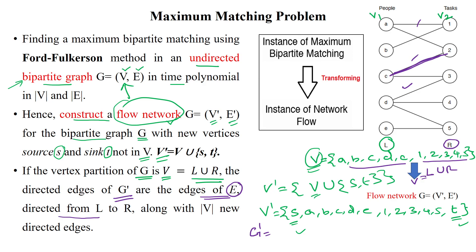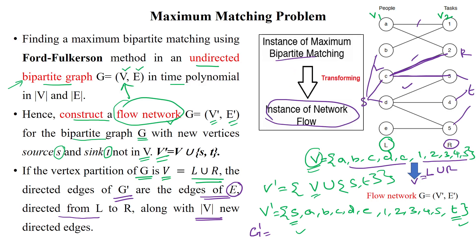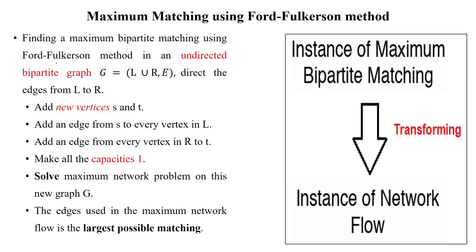The edges in G' are directed from left to right — from the left subset to the right subset — along with new directed edges from S to each vertex in L, and from all vertices on the right side to destination vertex T. This transformation process applies the Ford-Fulkerson algorithm to the bipartite graph.